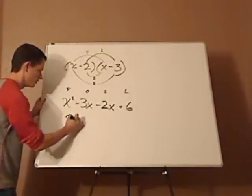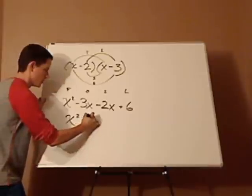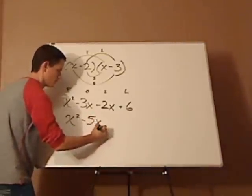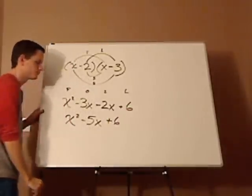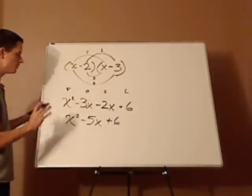Then you simplify it. So when you simplify it, you get x squared minus 5x plus 6.